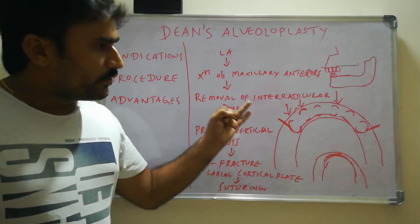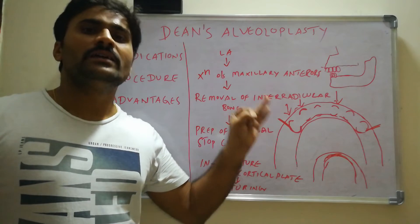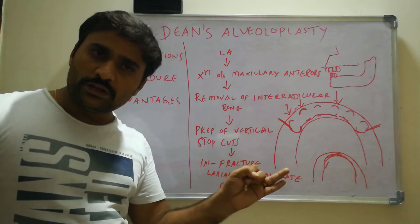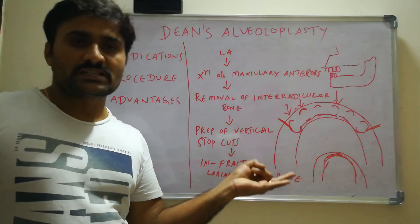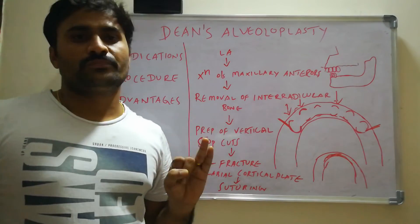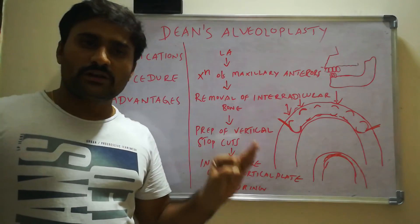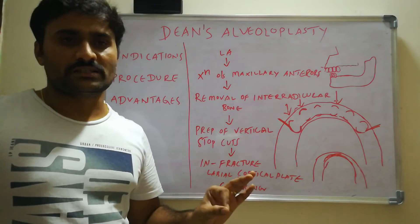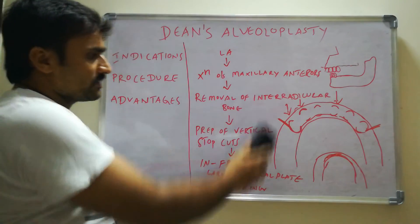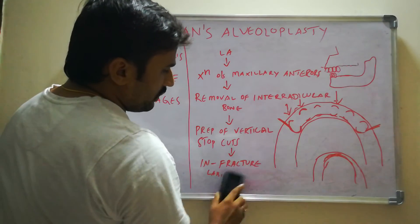The second advantage is that we remove the anterior maxillary proclination. We are simultaneously doing vestibuloplasty and also removing excess overjet. These are the two most important advantages of Dean's alveoloplasty.